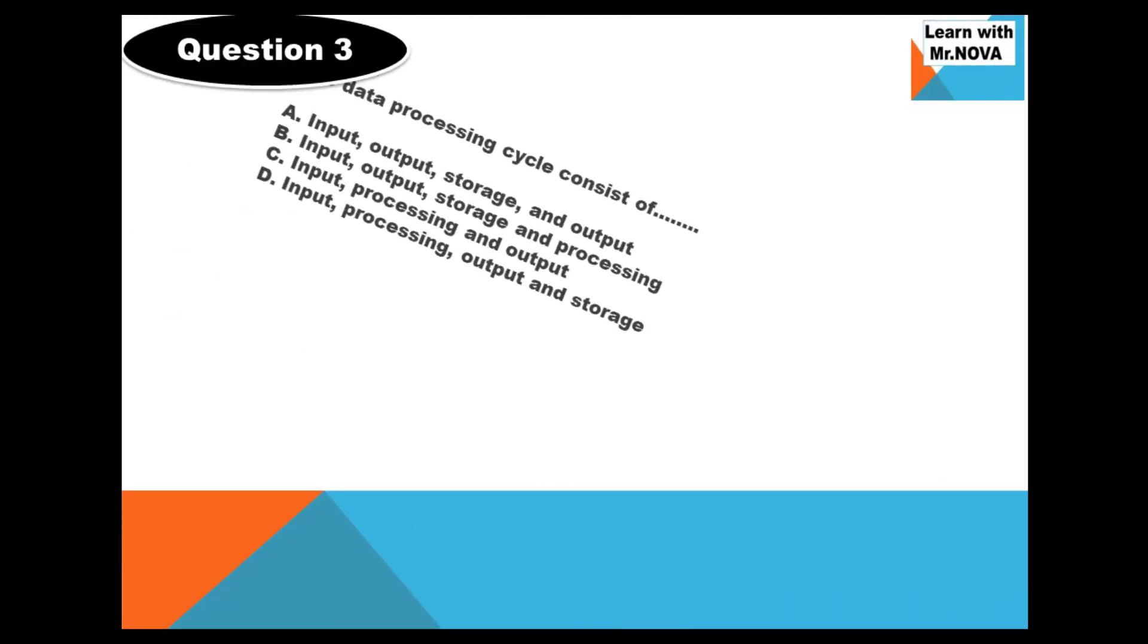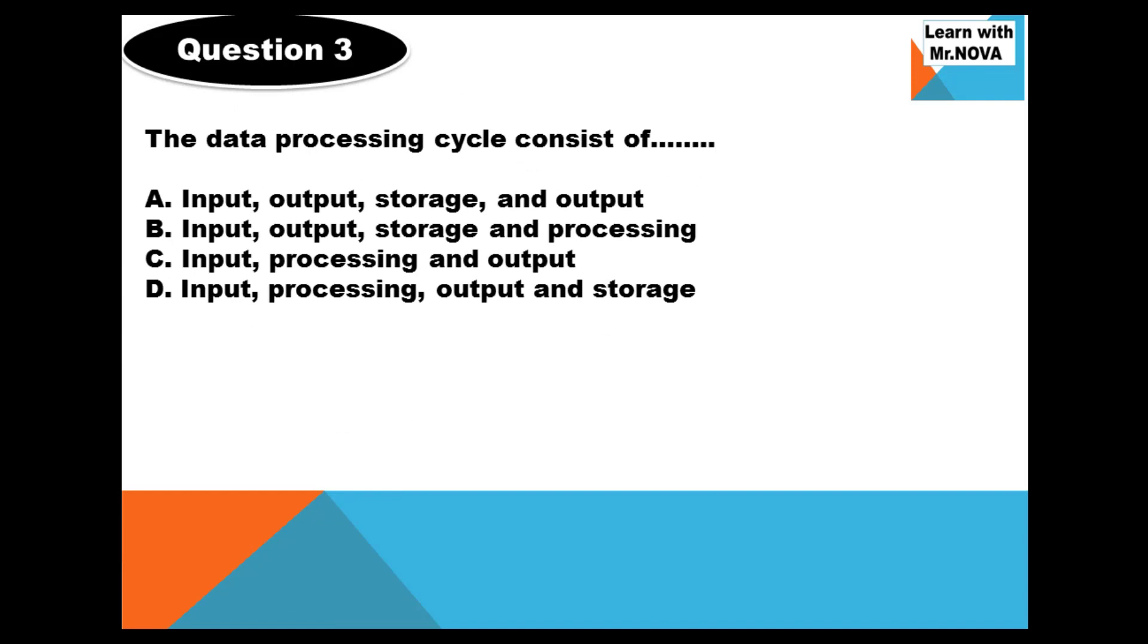Question 3. The data processing cycle consists of: A. Input, Output, Storage, Output, B. Input, Output, Storage, Processing, C. Input, Processing, Output, Output, D. Input, Processing, Output, Storage. 3 seconds to answer this question.